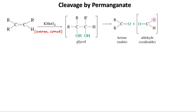The products are initially ketones and aldehydes, depending on the substituents attached to the double bond. Double-bonded carbons having a hydrogen attached will convert into aldehydes, and those attached to two alkyl groups are converted into ketones.